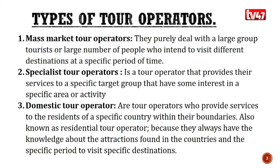After defining what a trip is, a tour, an itinerary, and a tour operator, we can now look at the types of tour operators that exist. The first type is mass market tour operators, who purely deal with a large group of tourists or large number of people who intend to visit different destinations at a specific period of time.